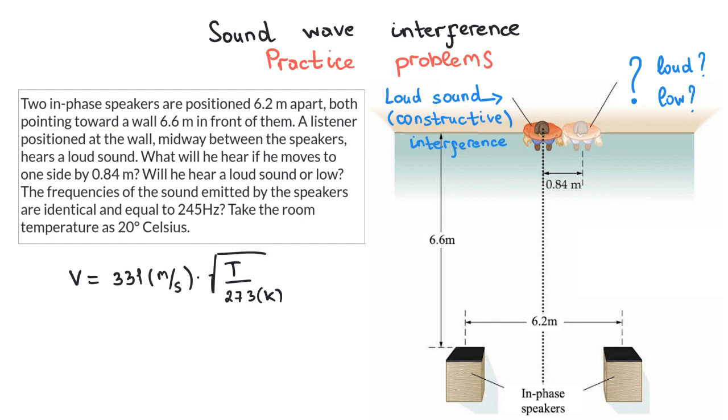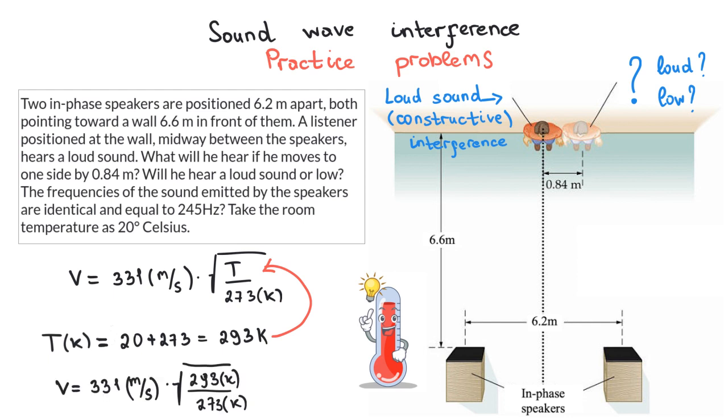Now, I have a question for you. What is 20 degrees Celsius in kelvins? We add 273 to the temperature in Celsius to have kelvins. So, 273 plus 20, the temperature of our room, is equal to 293 kelvins. Now, we substitute this value to the formula of velocity and get the speed of sound in our room equal to 343 meters per second.